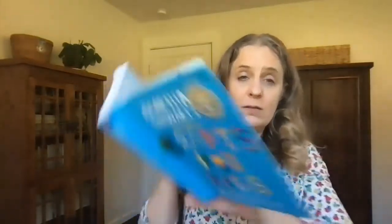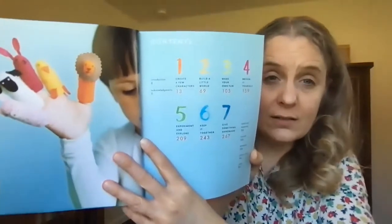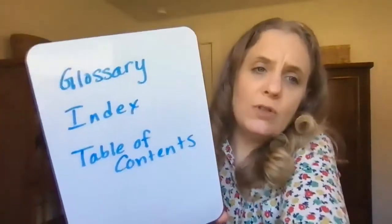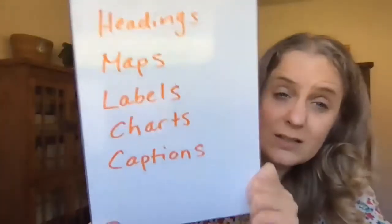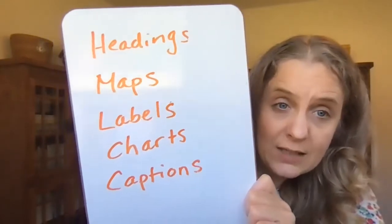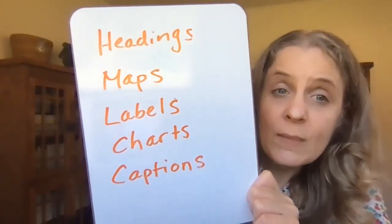When it gives a definition of some of the important words — like I showed you in the cat book — that's a glossary. And when it's at the beginning of the book and tells you about all the different things that will be in that book, that's the table of contents. So those are more nonfiction text features for you to consider: a glossary, an index, a table of contents. And then our old standbys: headings, maps, labels, charts, captions, and photographs — lots of times there are photographs.